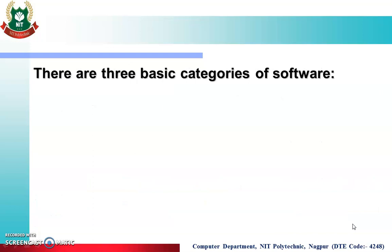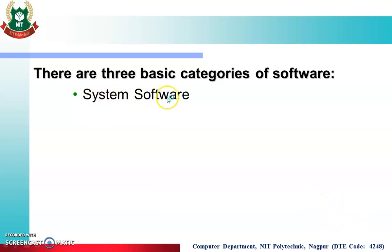Basically, there are three categories of software. The first one is system software, and our operating system falls under system software because without installing the operating system, we cannot use computer hardware. Examples of system software include the operating system, device drivers, and many more. The second category is application software, where the user's choice arises.